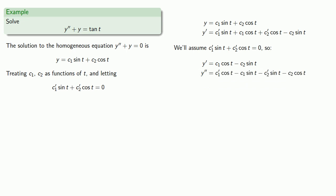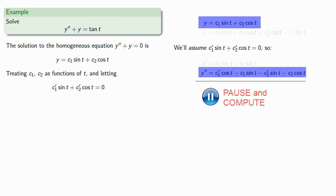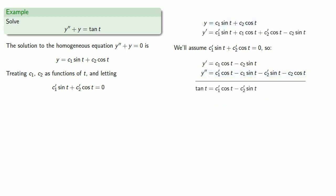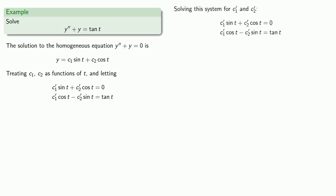We want y double prime plus y to equal tangent of t. So take y and add y double prime and that gives us tangent equals c1 prime cosine t minus c2 prime sine t. There's a second equation that involves c1 prime and c2 prime. Let's solve this system for c1 prime and c2 prime.